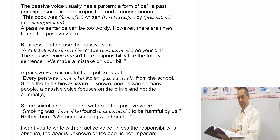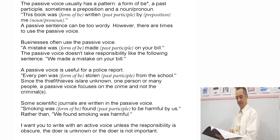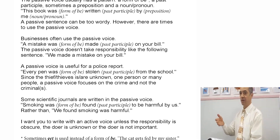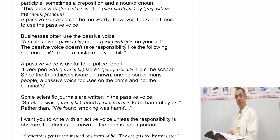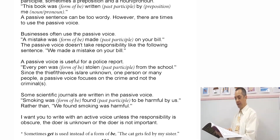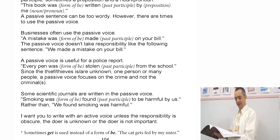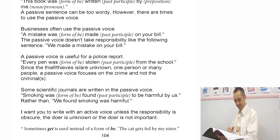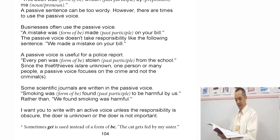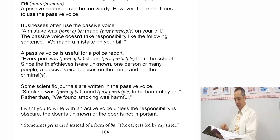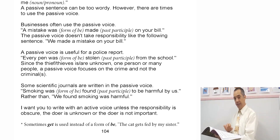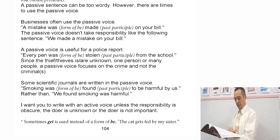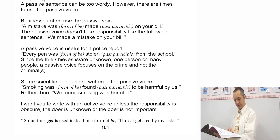Some scientific journals are written in the passive voice. For example: Smoking was (form of be) found (past participle) to be harmful by us, rather than: We found smoking was harmful. I want you to write with an active voice unless the responsibility is obscure, the doer is unknown, or the doer is not important.